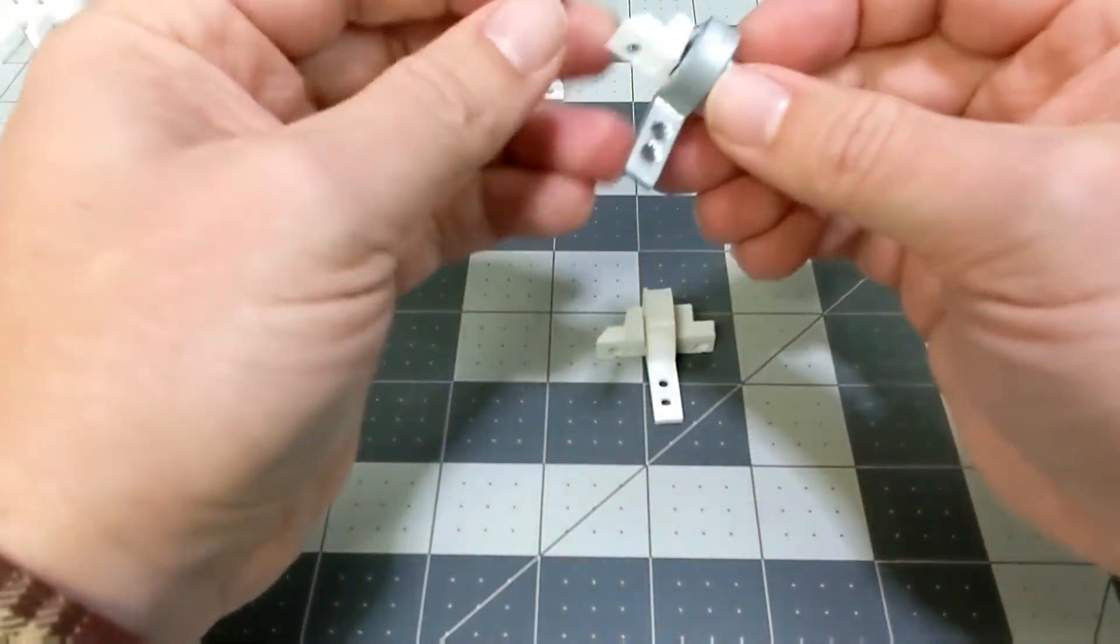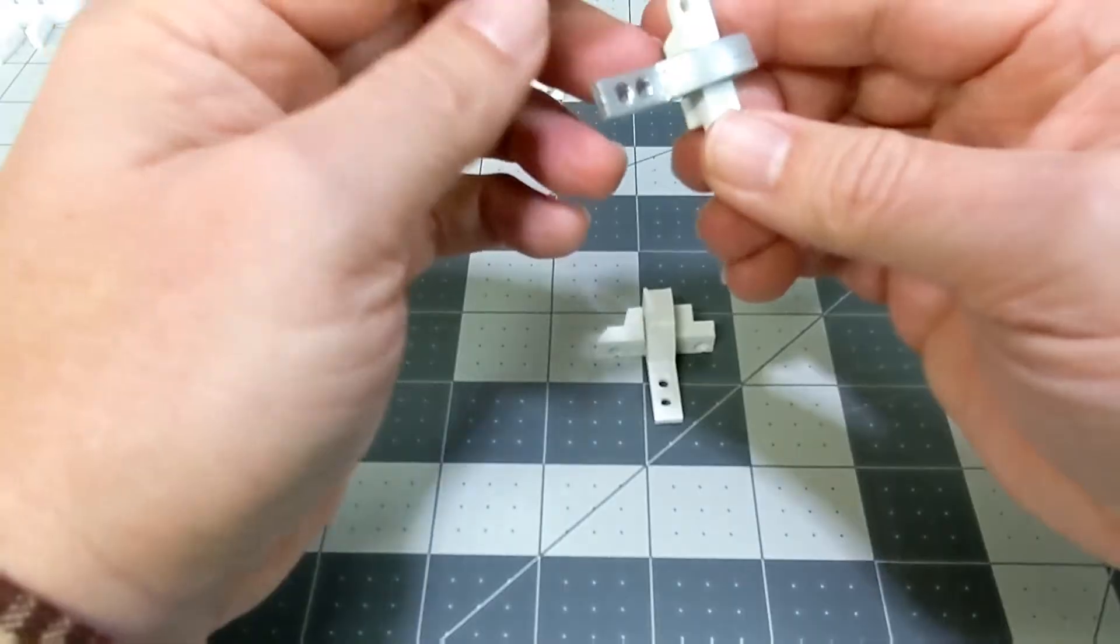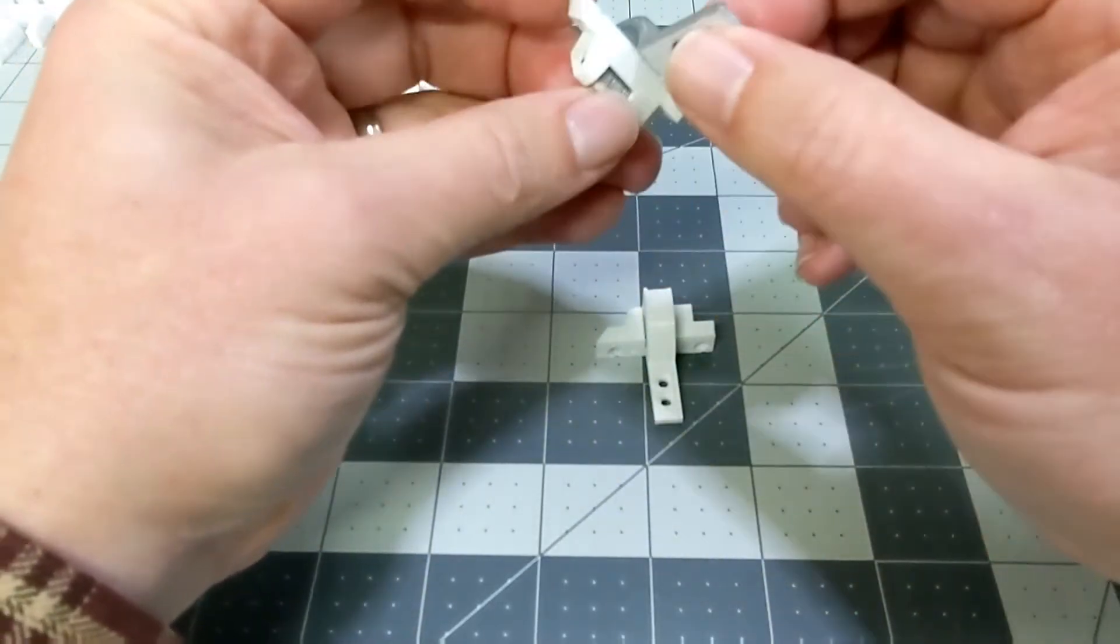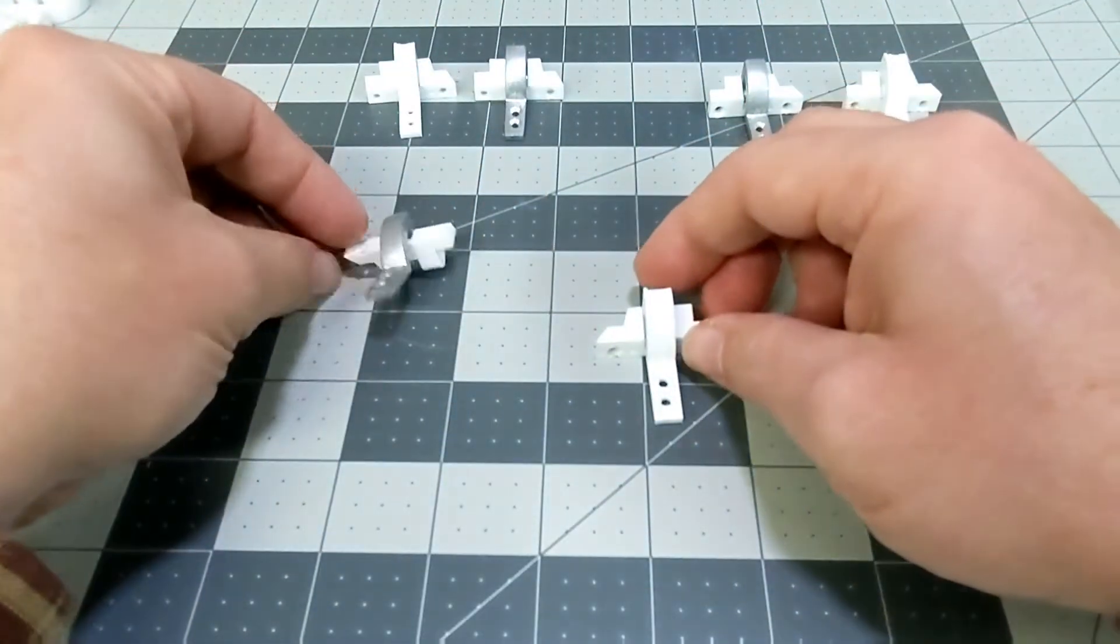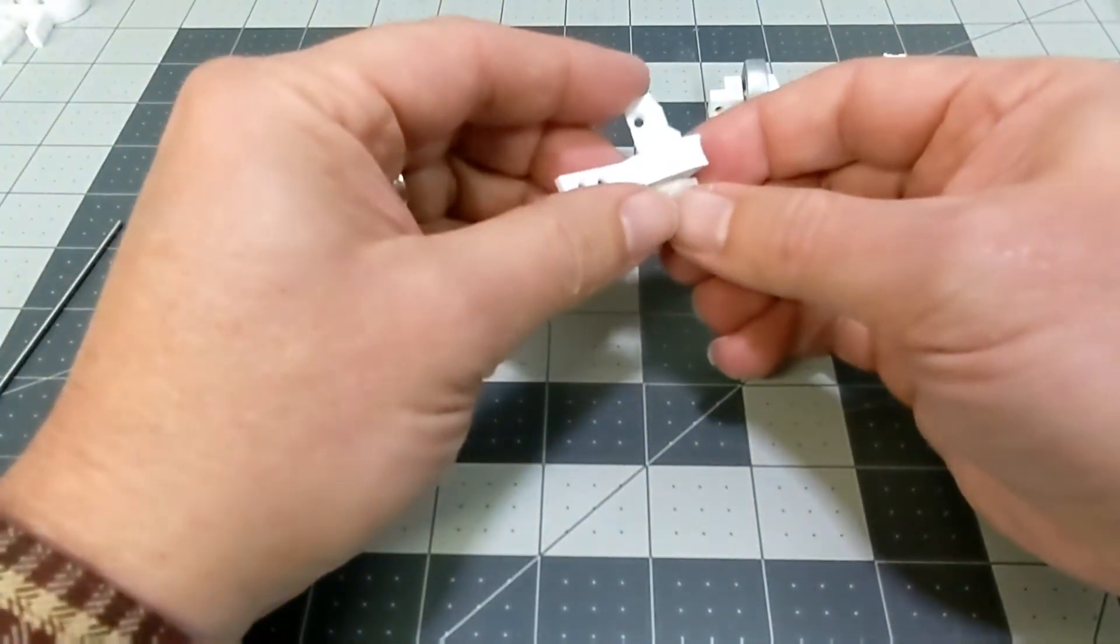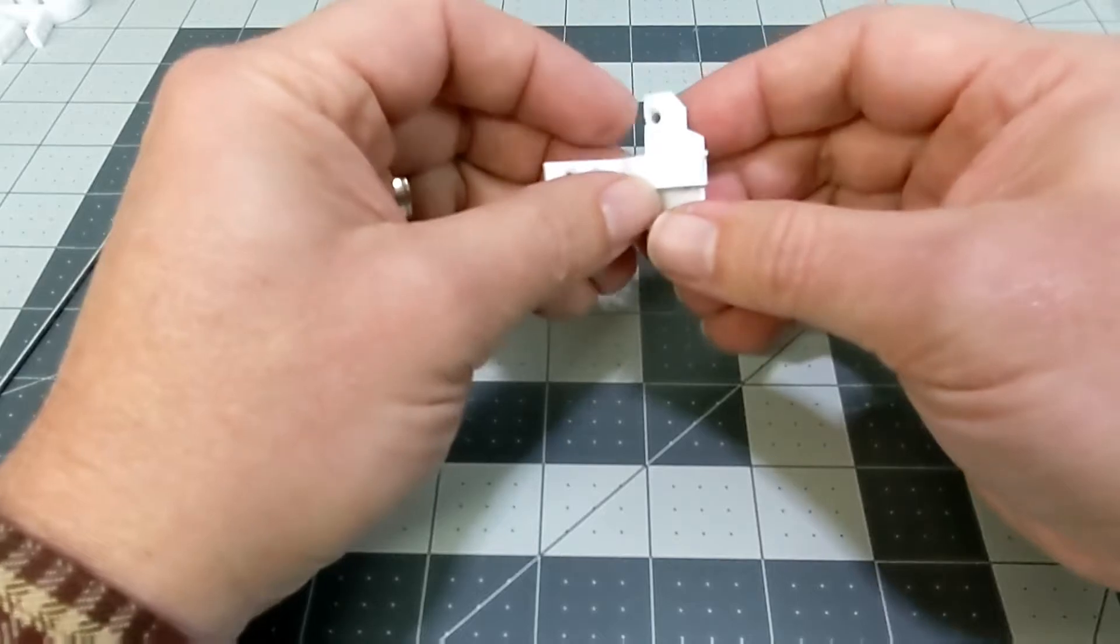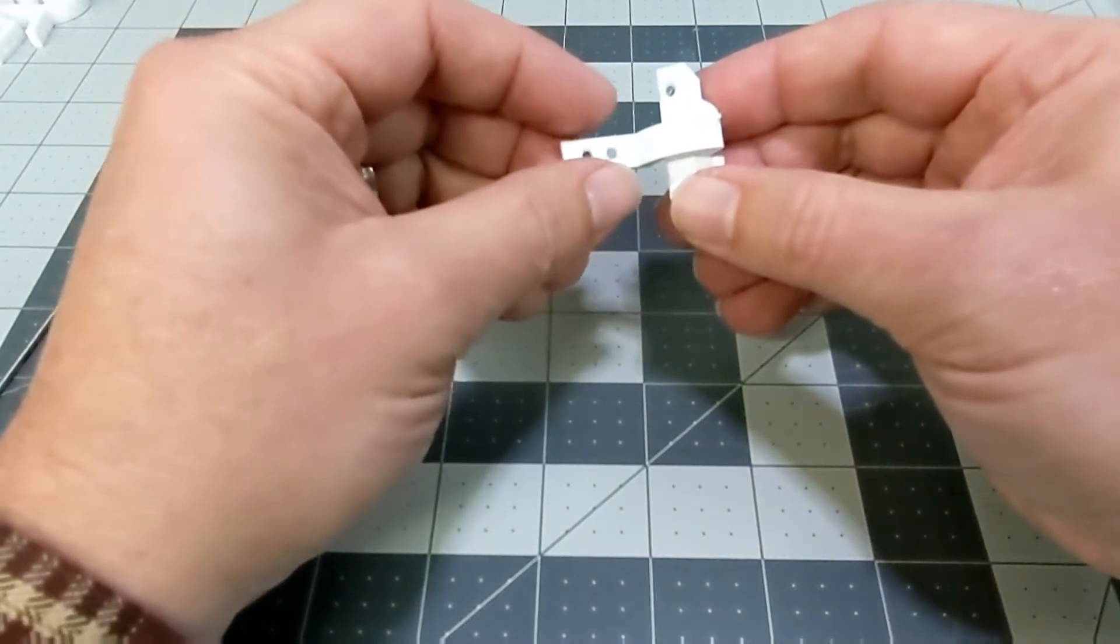So the upper hinge just rotates freely. That's attached to the body right here. This is attached to the door, and then the hinge works. And it's the bottom hinge that is intended to be connected to a linkage to the servo.